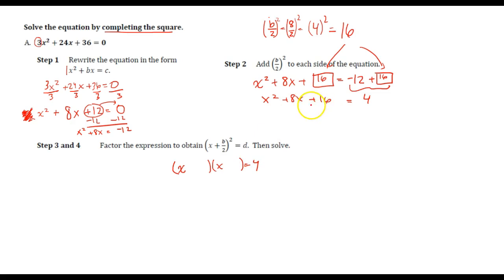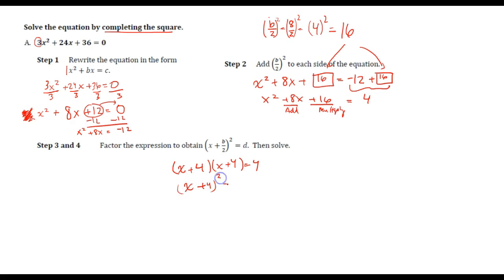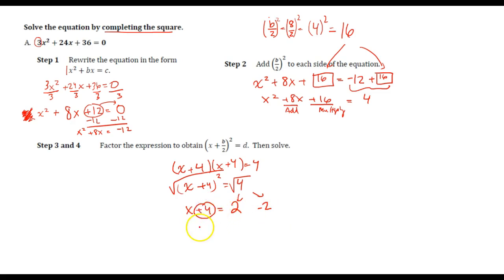What two numbers multiply to get 16 but add to get 8? That's 4 and 4 — positive. 4 times 4 is 16 and 4 plus 4 is 8. So I can rewrite this as x plus 4 squared equals 4. We'll square root both sides, getting x plus 4 equals positive 2 or negative 2. The opposite of adding 4 is subtracting 4, so x equals either negative 2 or negative 6.